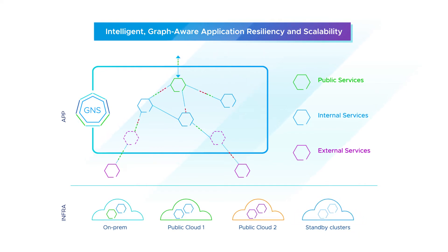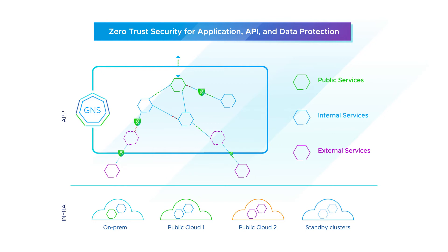Tanzu Service Mesh provides dynamic behavior-based security to protect microservices, APIs, and data, including end-to-end encryption, attribute-based access control, and API threat detection and protection.